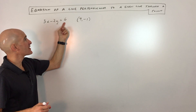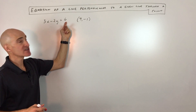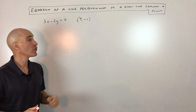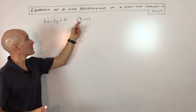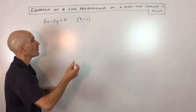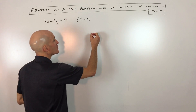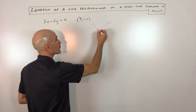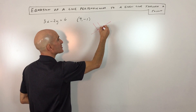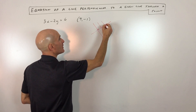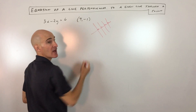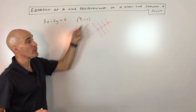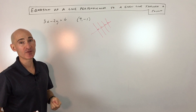They give us this line 3x minus 2y equals 6, and they say find a line that's perpendicular — at a right angle — to it that goes through the point (4, -1). When you have a line and a line perpendicular to that line, it forms that right angle, but there are actually a number of lines that would be perpendicular to the given line. We're looking for the one particular one that goes through the point (4, -1).